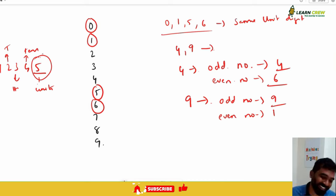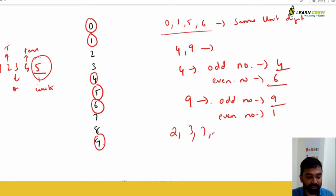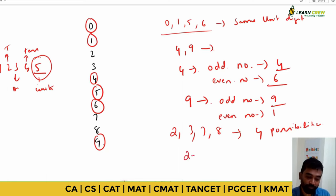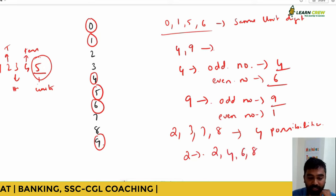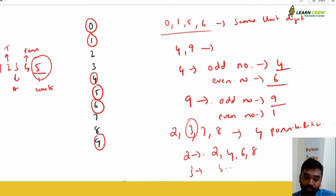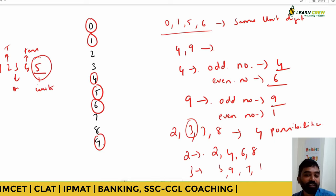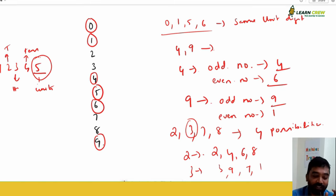Whenever the scenario involves two, three, seven, or eight, there are four possibilities each. For two: the unit digits cycle through 2, 4, 8, 6 — two squared is four, two cubed is eight, two to the power of four is 16, two to the power of five is 32, and then the cycle repeats. For three: the unit digits cycle through 3, 9, 7, 1. For seven: 7, 9, 3, 1. So four different possibilities exist whenever a number ends with 2, 3, 7, or 8.